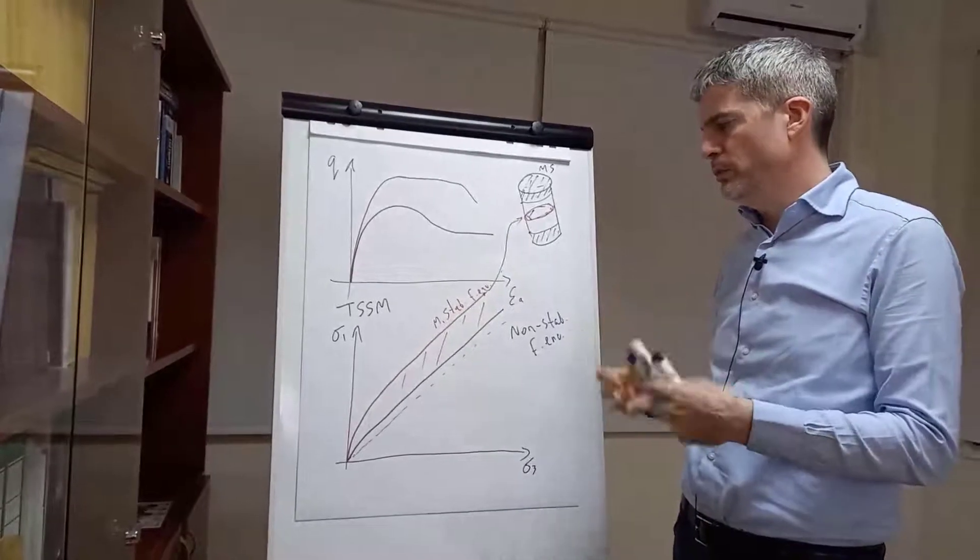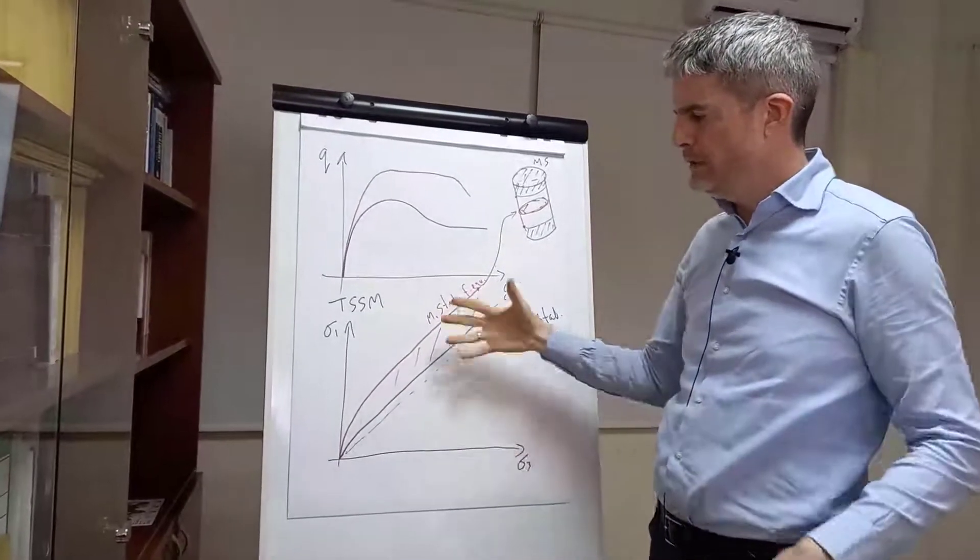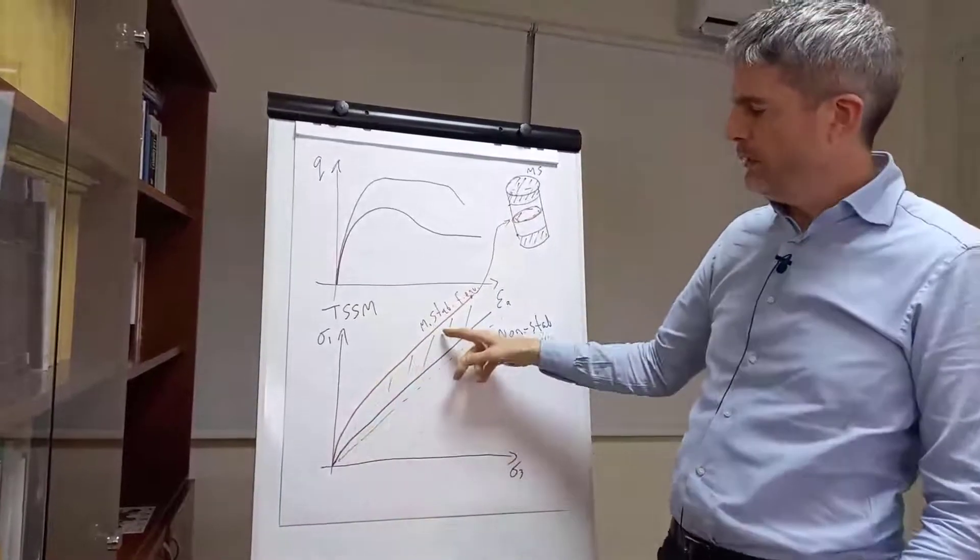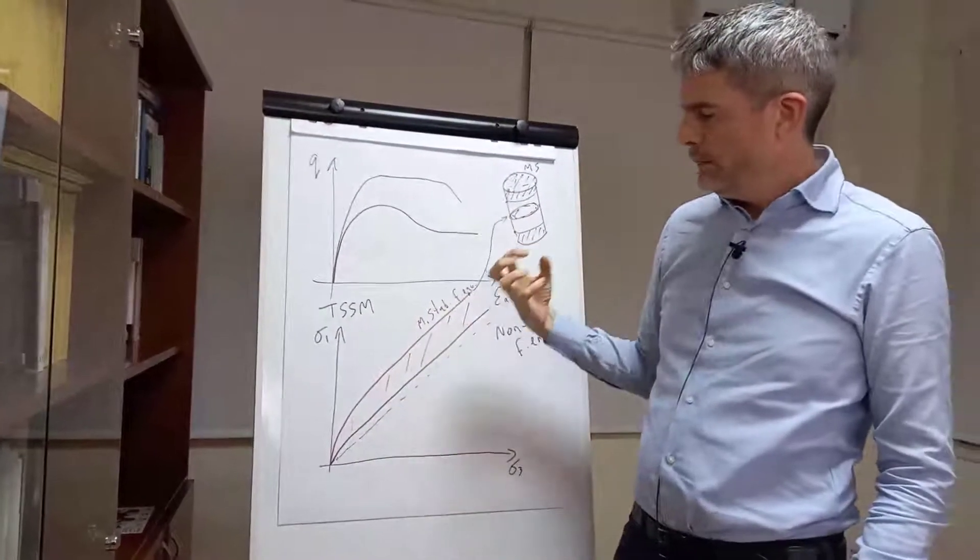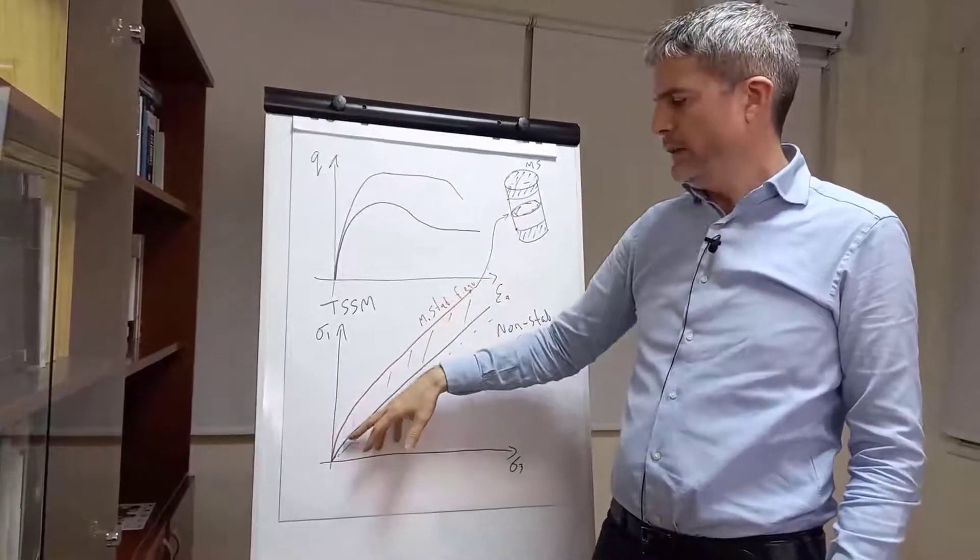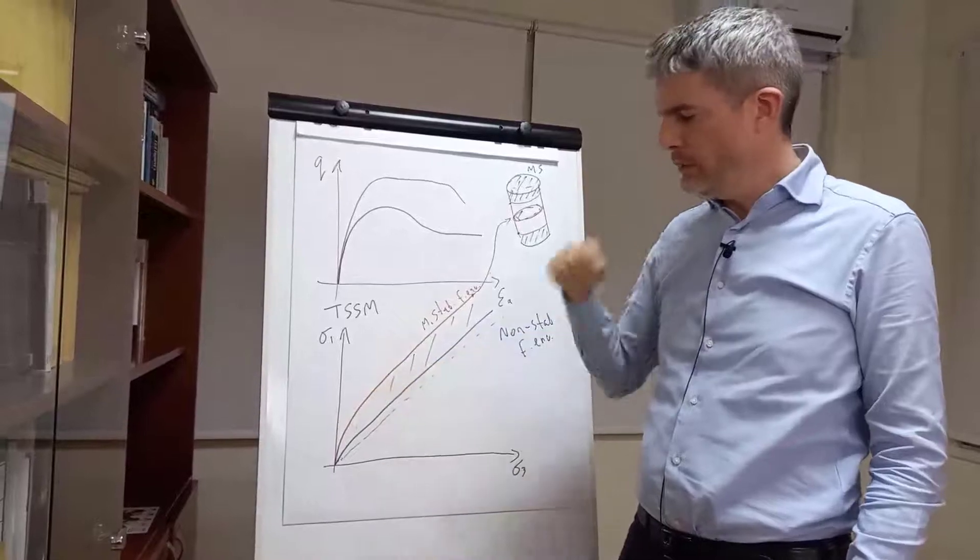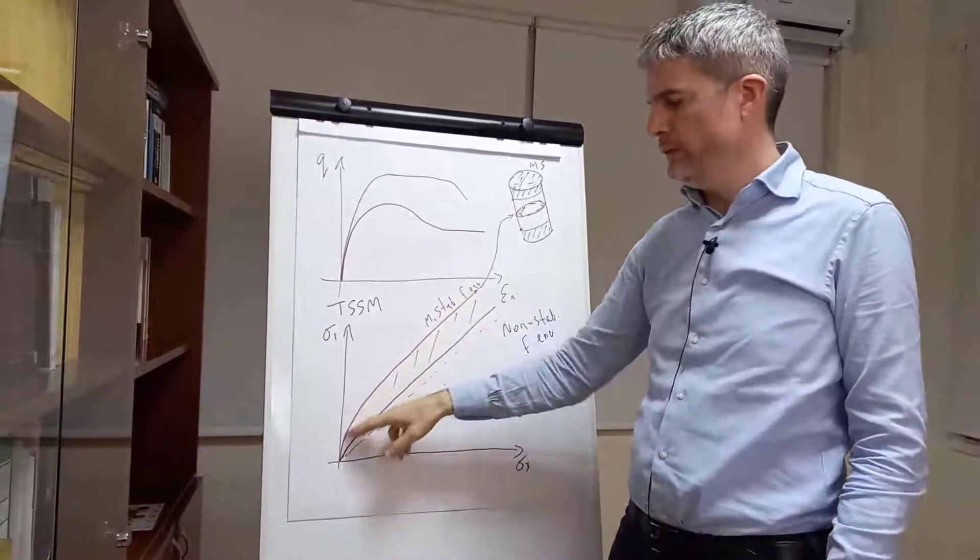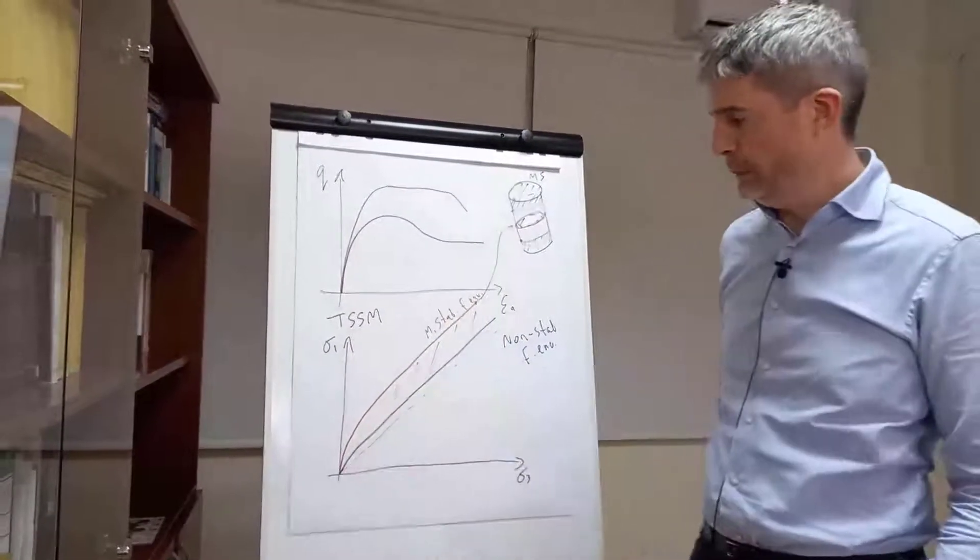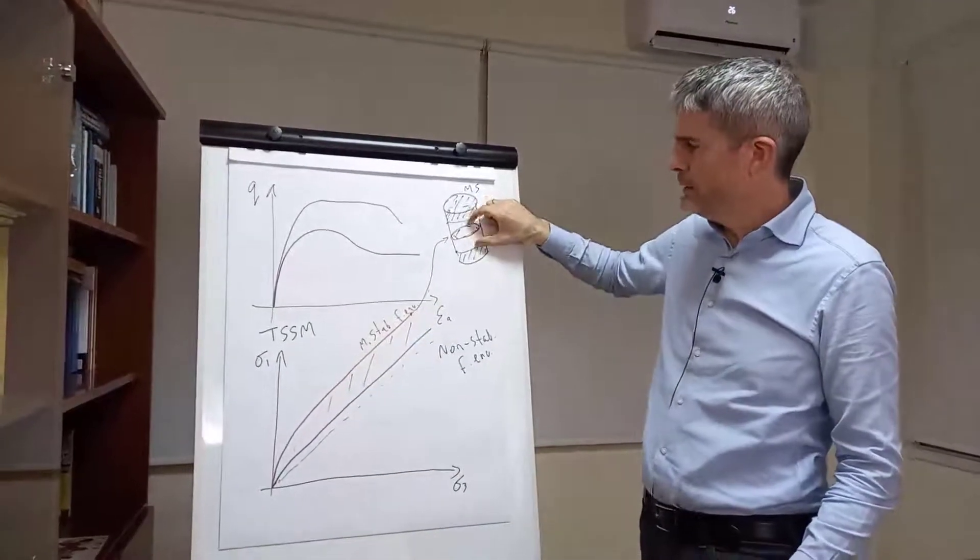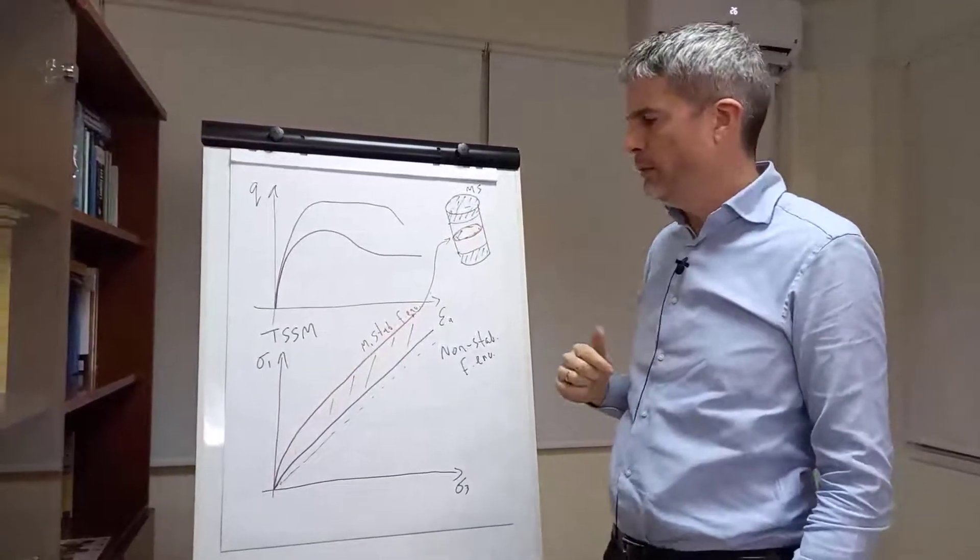So, those are the two important aspects of this model. It's the non-linear failure envelope to take into account the mechanical stabilization. It's the extra interlock that needs more energy to overcome the dilatancy within the aggregate. That's why we get this enhanced curvature in the failure envelope. So, it's that failure envelope plus the variation with height above the grid.